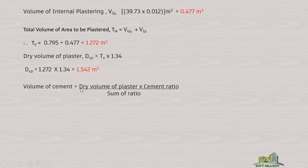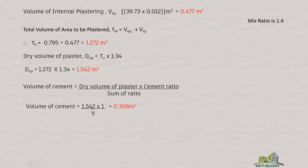Volume of cement equals dry volume of plaster multiplied by the cement ratio, divided by the sum of ratio. The mix ratio given in the question is 1:4, so the sum of the ratio is 5, and the cement ratio is 1. Therefore, volume of cement equals 1.542 multiplied by 1, divided by 5, which equals 0.308 cubic meters.